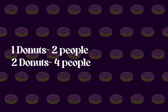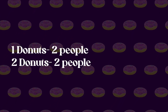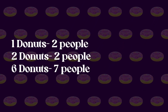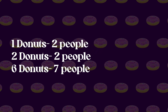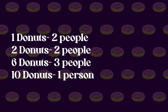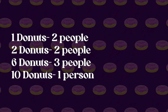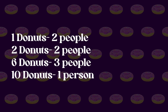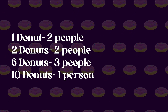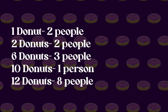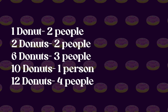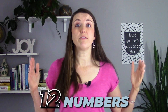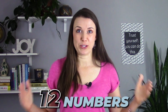Two doughnuts, four people — reduced it to two. Six doughnuts, seven people chose that, which I reduced to three. Ten doughnuts, one person said, and I wanted to keep it, so I kept it at one. And twelve doughnuts, eight people, so I reduced it to four. So now our statistics, we have twelve numbers.